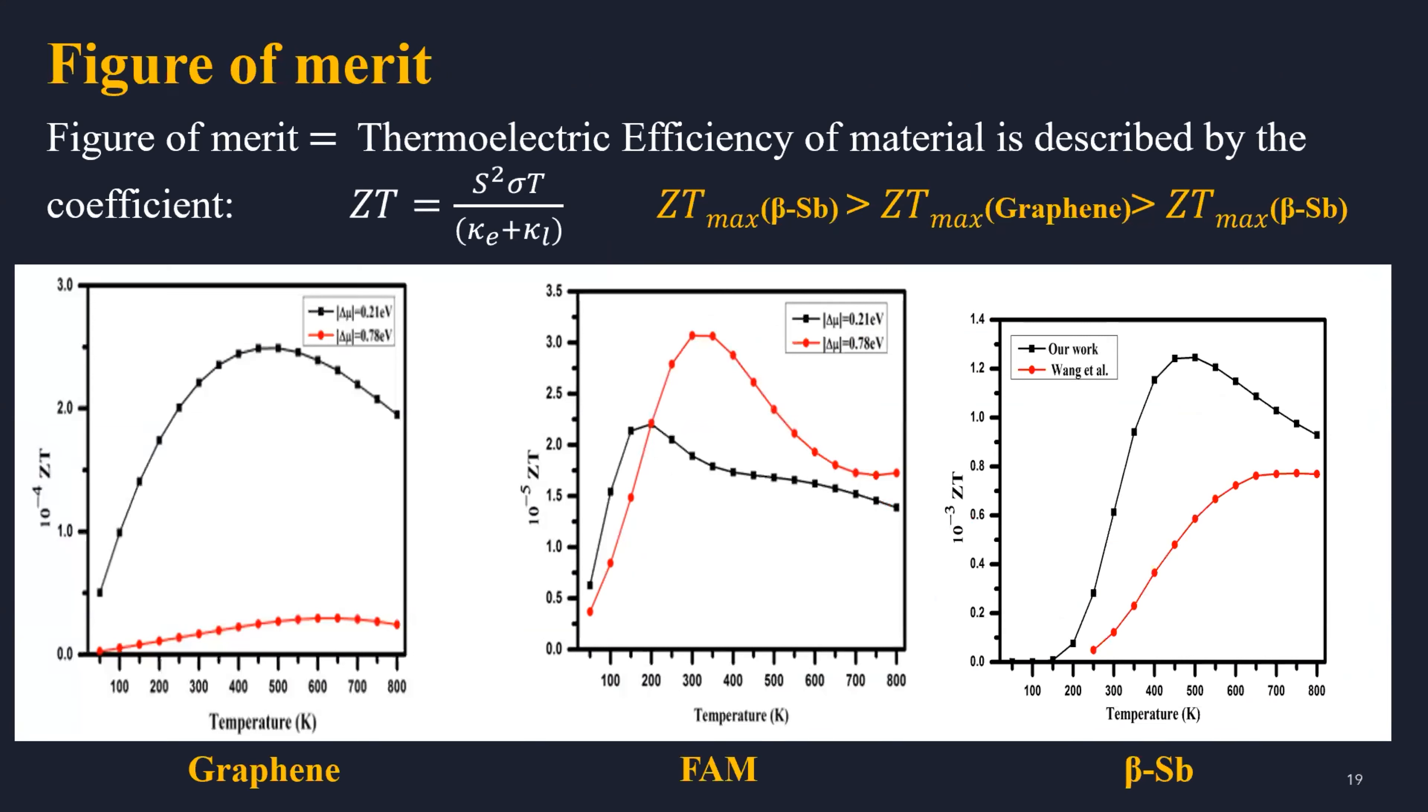The figure of merit is the thermoelectric efficiency of material depending on Seebeck coefficient, electrical conductivity, thermal conductivity, and temperature. We can see that the thermoelectric efficiency of beta antimony is greater than one.